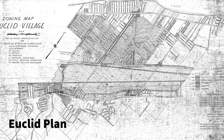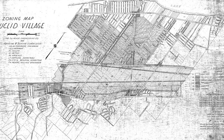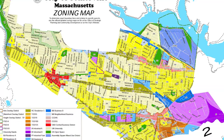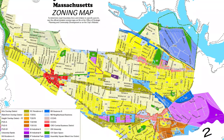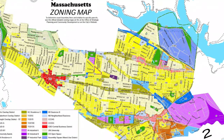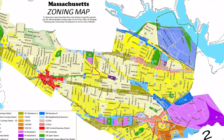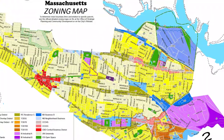The Euclid decision in the mid-1920s also brought rationale about zoning. From Euclidean zoning came the idea that zoning determines the following: the division of land, equal treatment, land uses, and intensity of development.